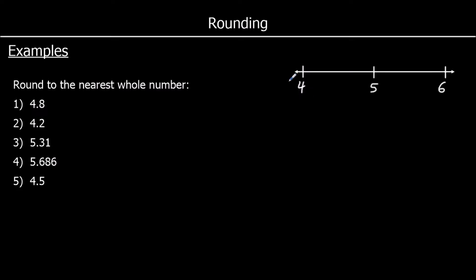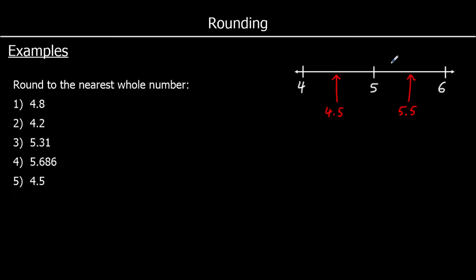Here we've got part of a number line, so we've got 4, 5, and 6. Halfway in between 4 and 5 is 4.5, and halfway in between 5 and 6 is 5.5. So this is our cutoff point. Anything in between 4.5 and 5.5 is closest to 5 — it's closer to 5 than it is to 4 or 6.